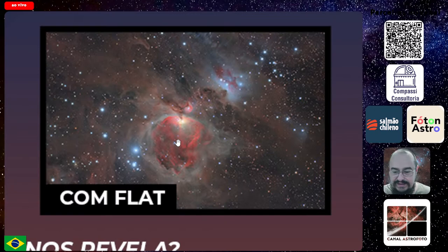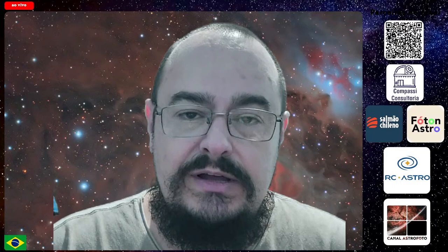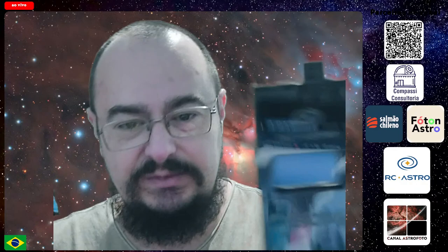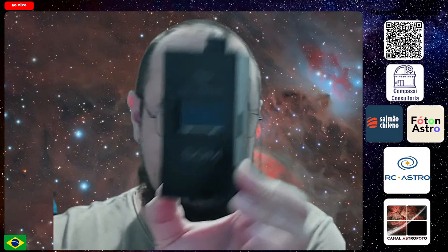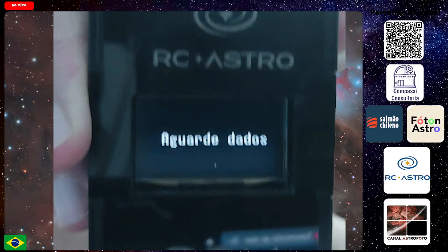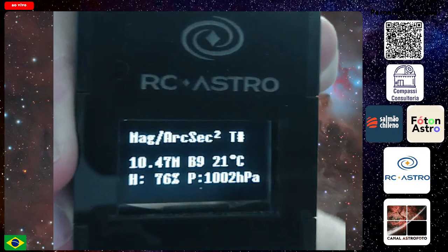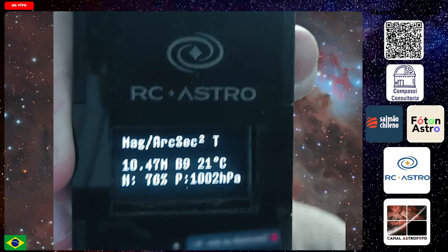Fiquem ligados que em breve vai ter o lançamento desse novo equipamento da RC Astro Equipamentos. Pra quem não conhece, eu fabrico equipamentos eletrônicos pra astronomia e astrofotografia. Por exemplo aqui um SQM, que é o medidor de poluição luminosa. Ele além de poluição luminosa, ele mede temperatura, umidade do ar e pressão atmosférica. 1.002 HPA, tá bem baixa a pressão do ar. 76% de umidade, 21 graus - perfeito pra fungos. Então tá pessoal, fiquem ligados aqui no canal Astrofoto, a gente se vê em breve. Um grande abraço a todos e até mais!